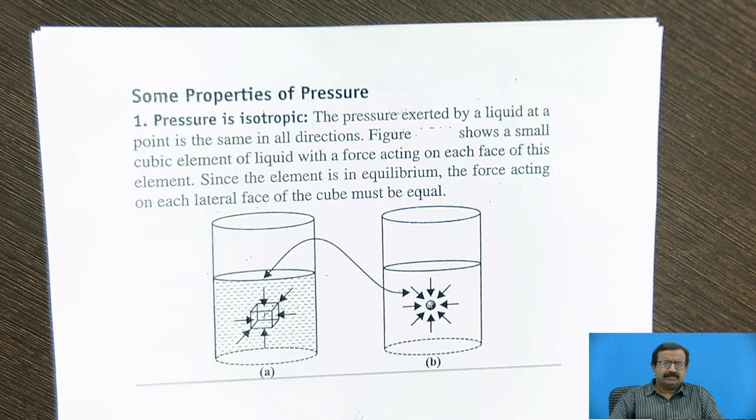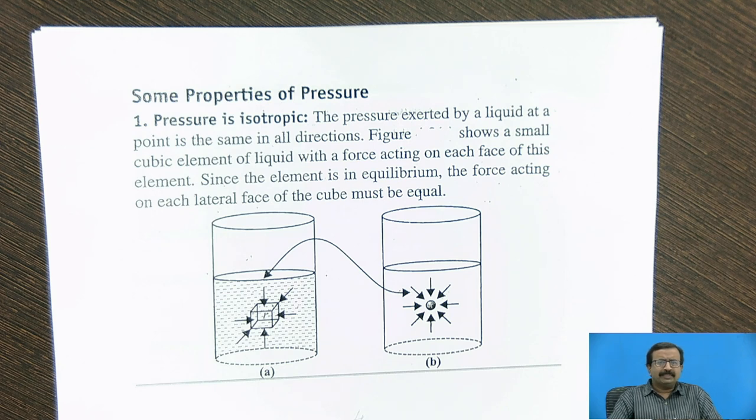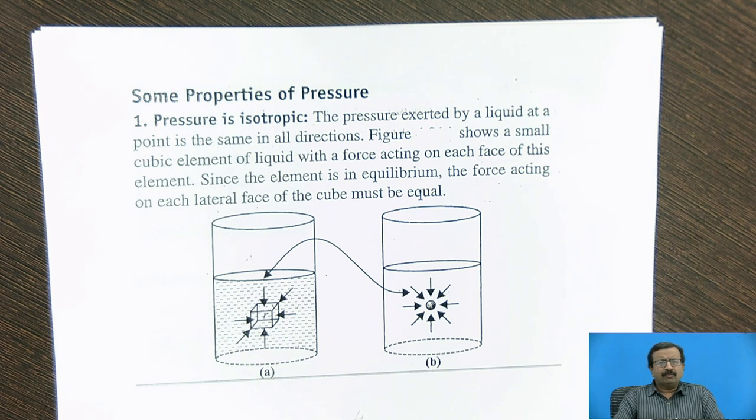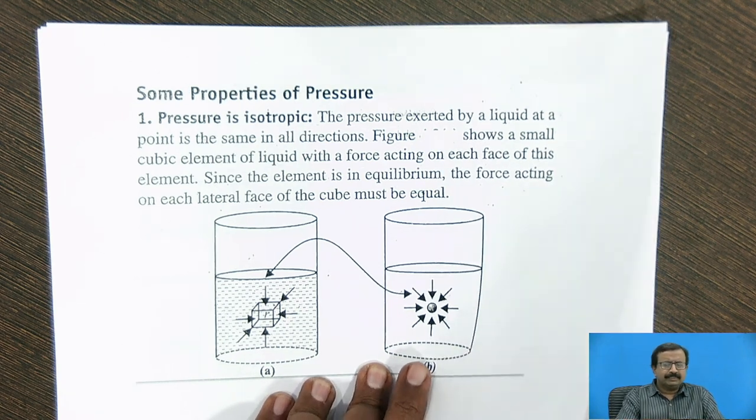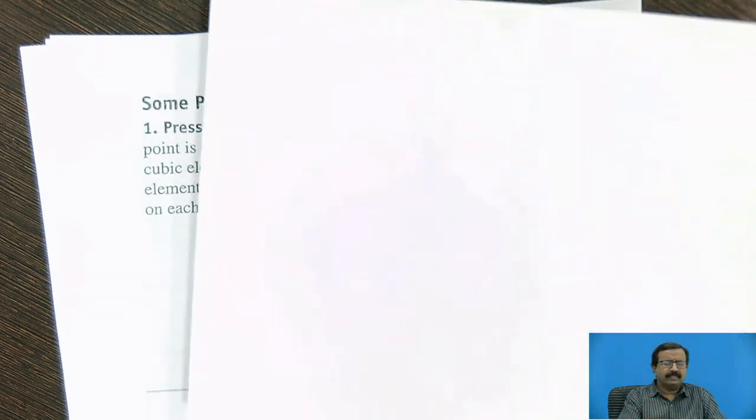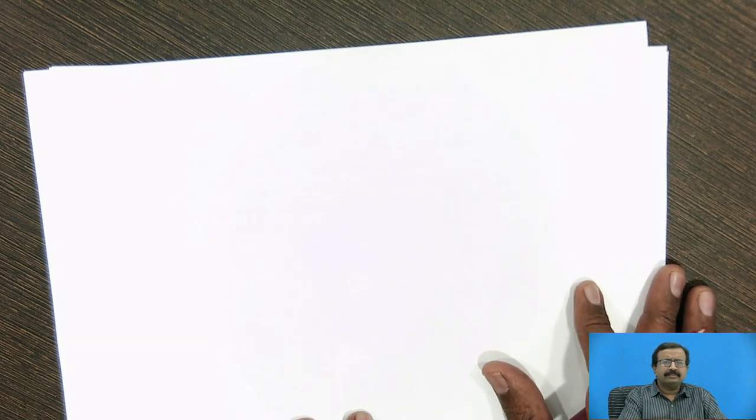Okay, now let us go back to the first session. The question I asked you about whether the pressure is scalar or vector. Many students have confusion, and they say that pressure is a vector quantity. The simple reason is they say that pressure is force upon area, and as force is a vector, and area is a scalar, they say that it is a vector quantity.